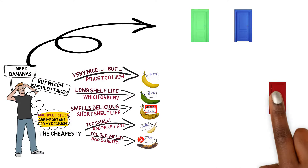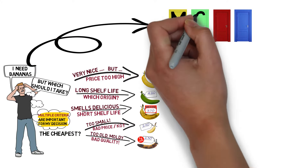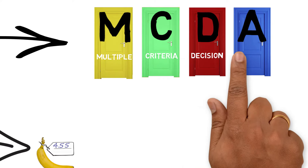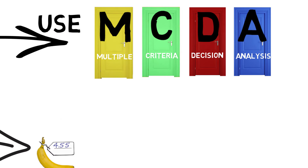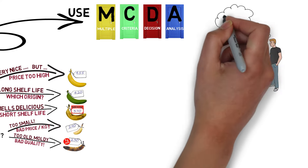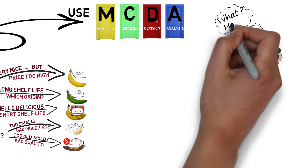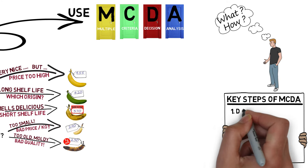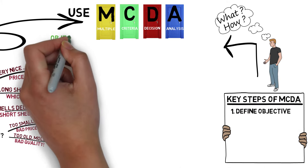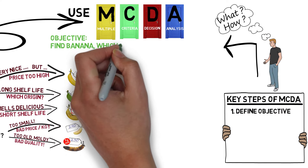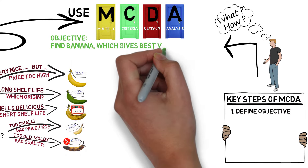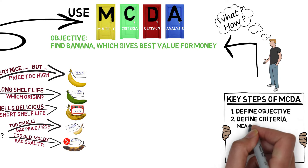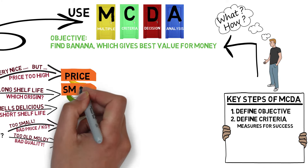This is where you can use an MCDA — Multiple Criteria Decision Analysis. So how does MCDA work? Let me explain it stepwise. The first important step is to define your objective: what do you want to achieve? For example, to find those bananas which give you the best value for money. Then you need to define criteria which help to measure the value for money of bananas.